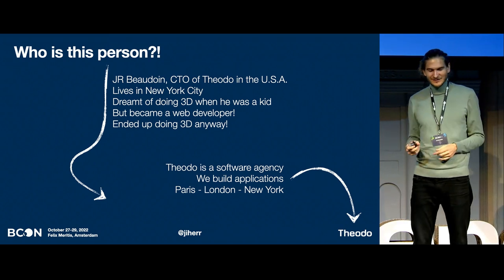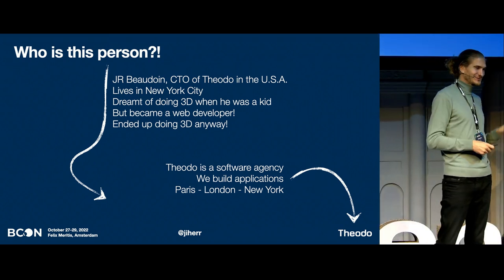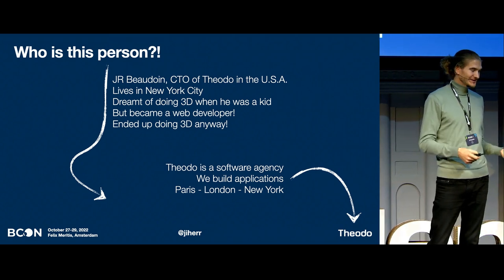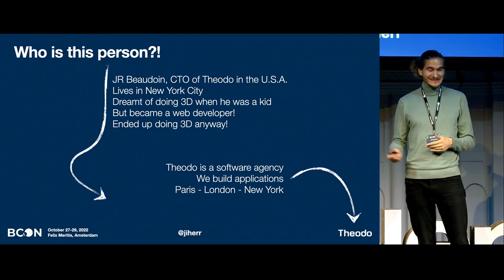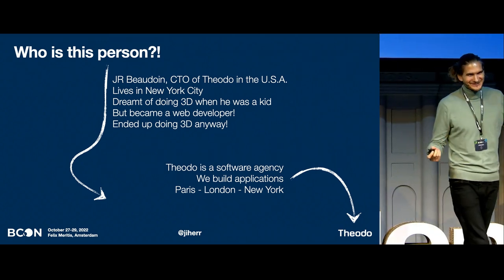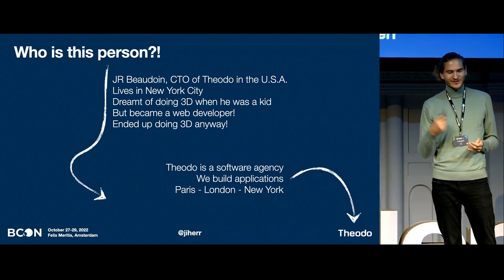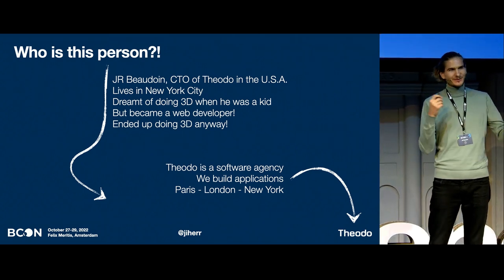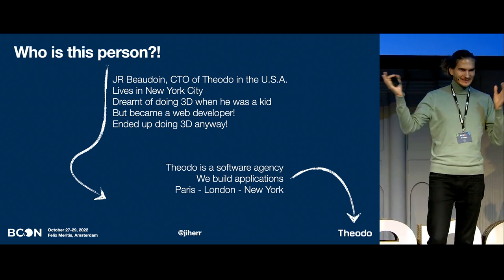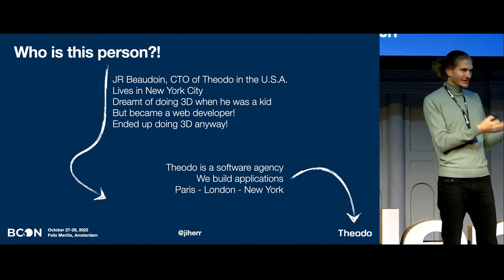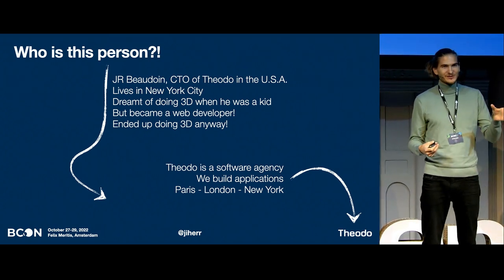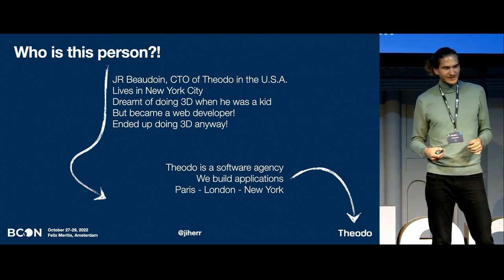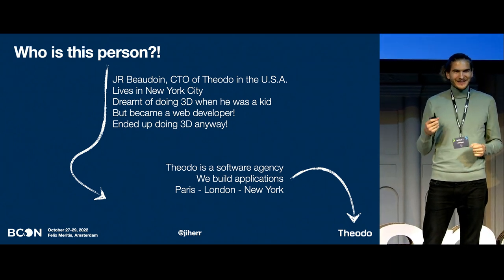Just a few words about myself. I'm Jean-Rémy Baudoin, or JR. I live in the US — no one gets Jean-Rémy if you live in the US. I'm French, I live in New York City. I grew up doing a lot of 3D, somehow got into web development instead, but ended up doing 3D, which is pretty nice. I work for Theodo — we're a software agency. We build web applications, websites for big names, but a lot of what we do is invisible to the public: applications that have very few users, like the designers at that company. We're based out of Paris, London, and New York, and we're about 600 people. Thank you very much.